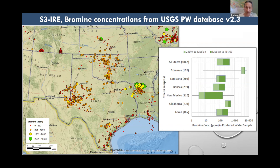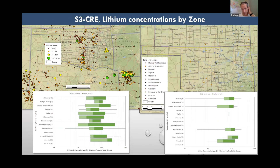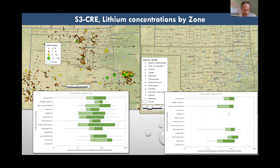Moving now to focus on Oklahoma, I'll supplement the USGS data with our own data from OCC's UIC application representative samples and the database I've put together. The map on the left shows lithium data from the USGS database centered on Oklahoma. The box plot on the bottom left groups the data by geological zone on the y-axis and illustrates lithium concentrations on the x-axis. The median concentration of lithium was highest in wells that produced water from the Arbuckle zone — which might be a surprise to some — with a median value over 10 parts per million from the Arbuckle.